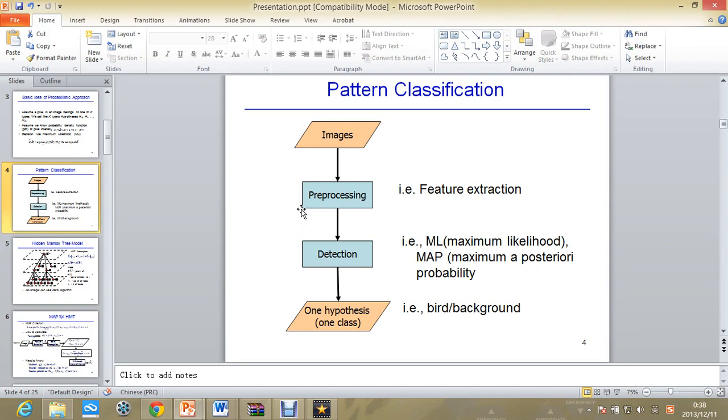First, the program will pre-process the image and extract the features. And then, by maximum likelihood or maximum a posteriori probability, the program will have the understanding of the pattern classification. And that is the basic process for the program learning the pattern.